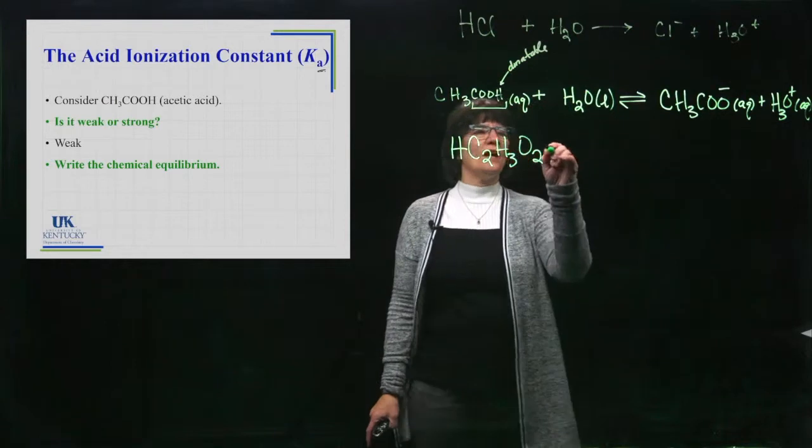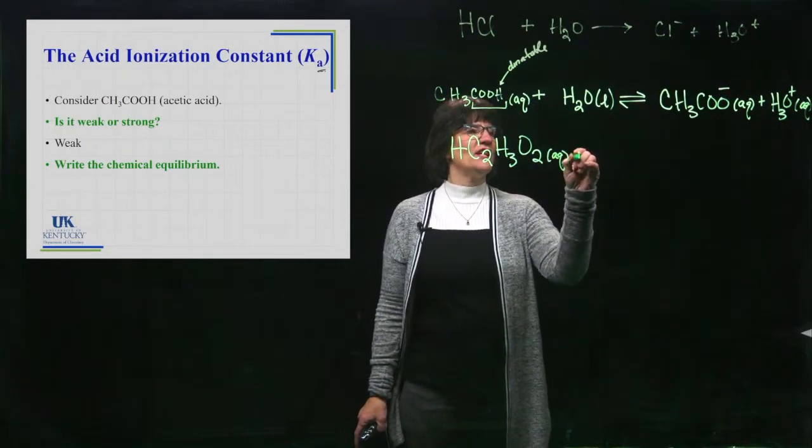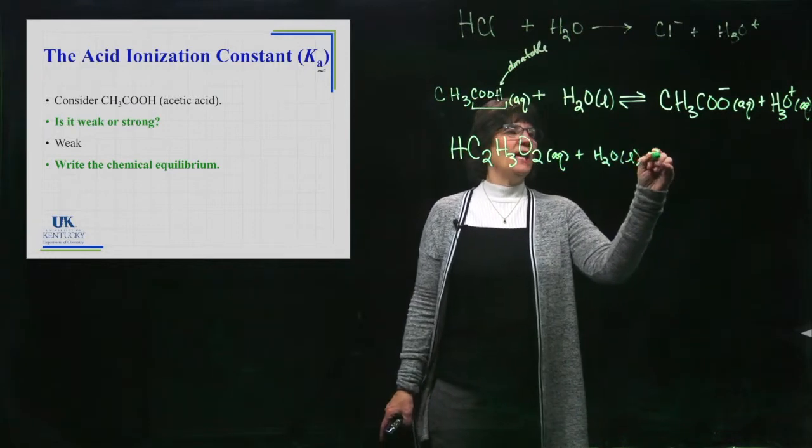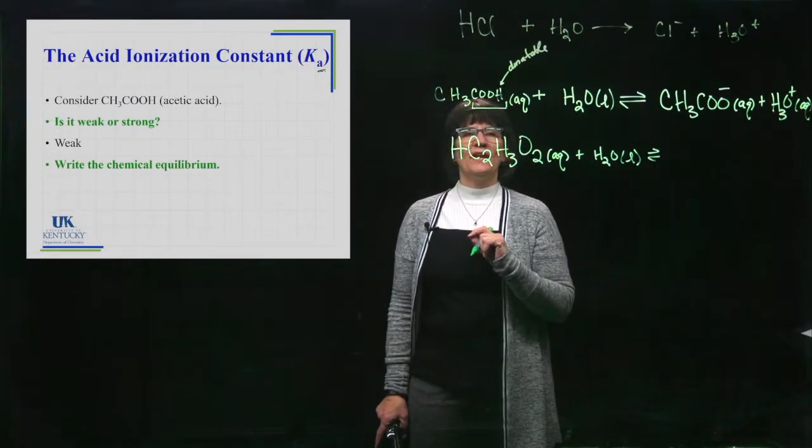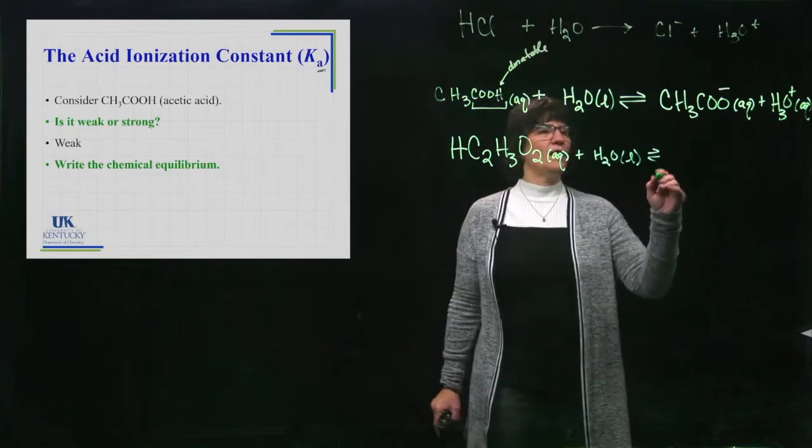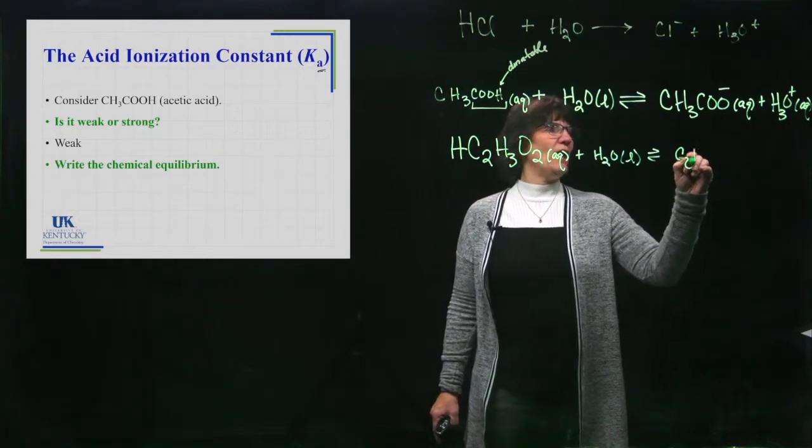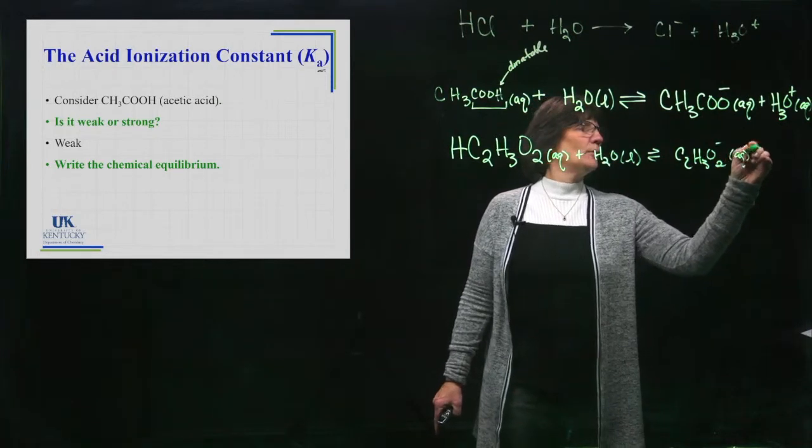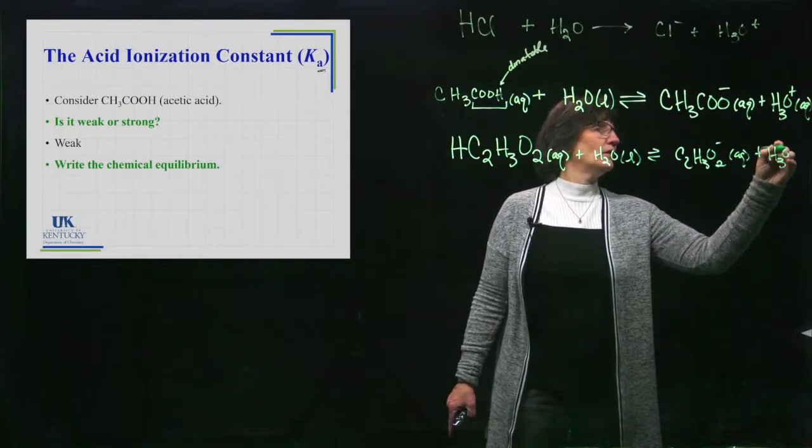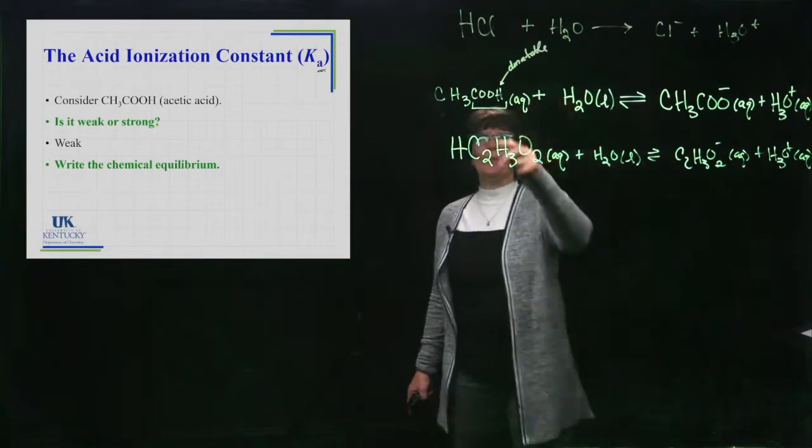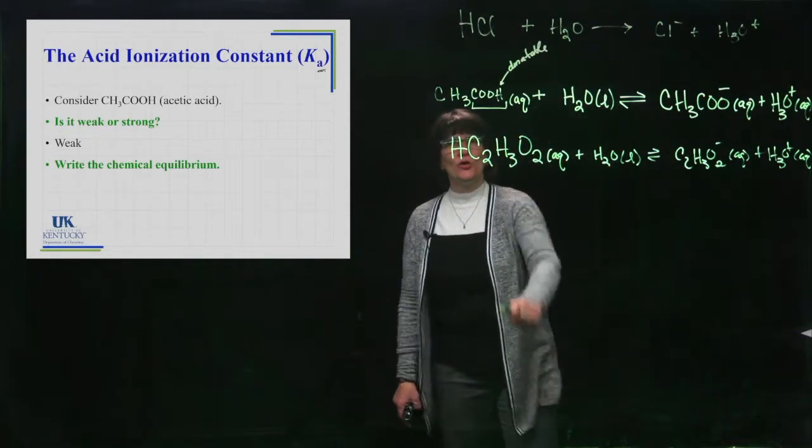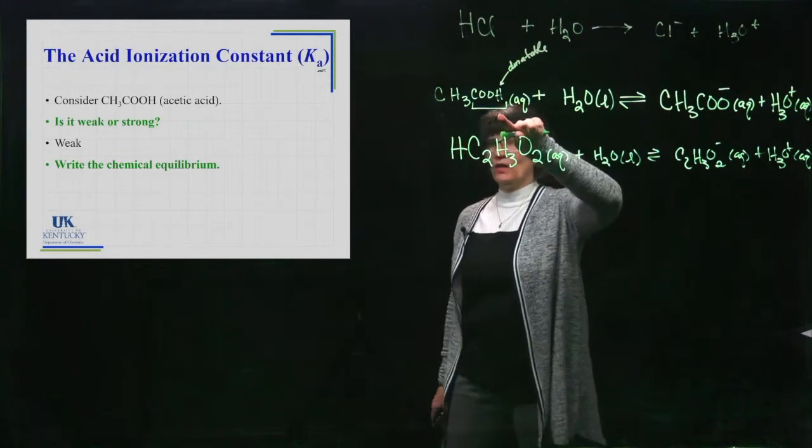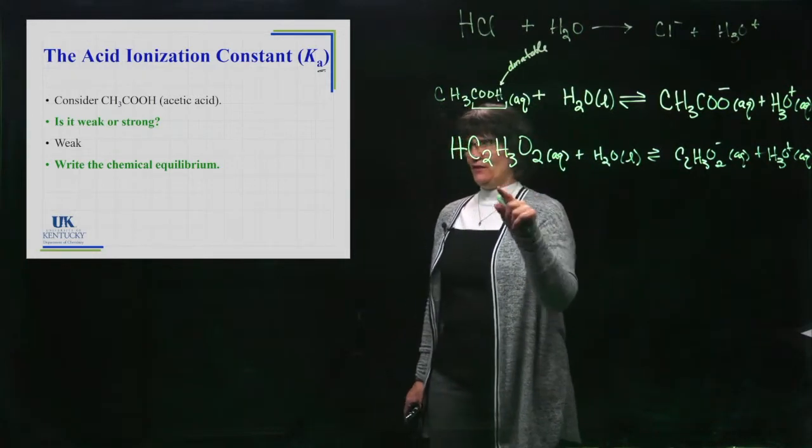When we dissolve this in there, some of it will turn into this ion. Once you've reached this equilibrium, you're going to have these coming back together and then splitting back apart. We have this reaction going back and forth at a constant rate. You might see this reaction written with the hydrogen at the front, so you would be left with C2H3O2 minus plus H3O plus. Both are acceptable ways of writing acetate.